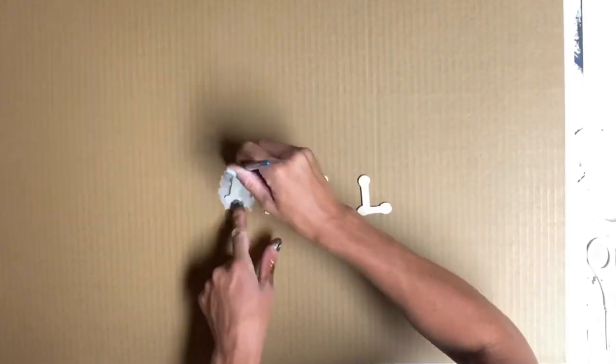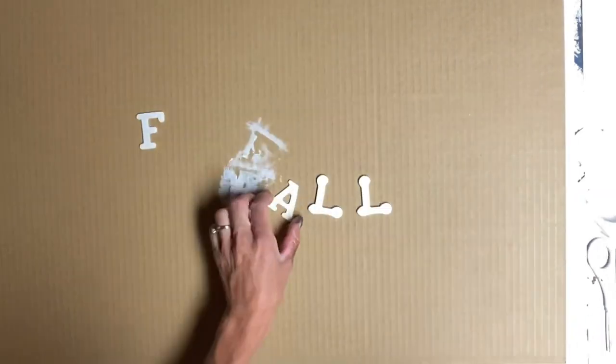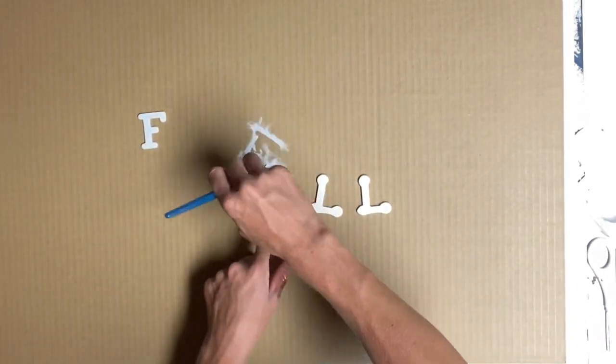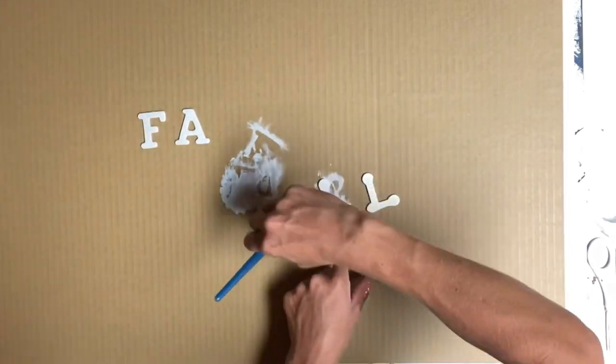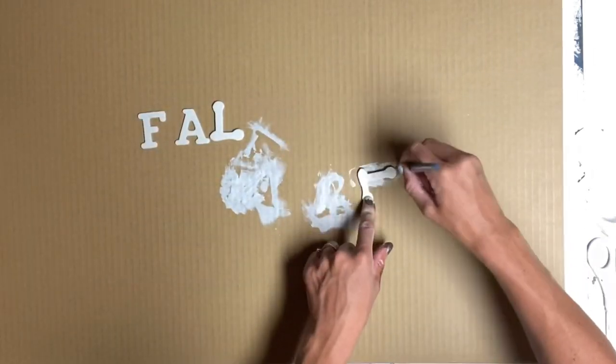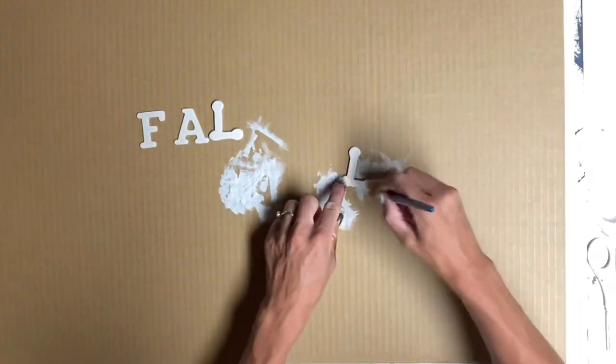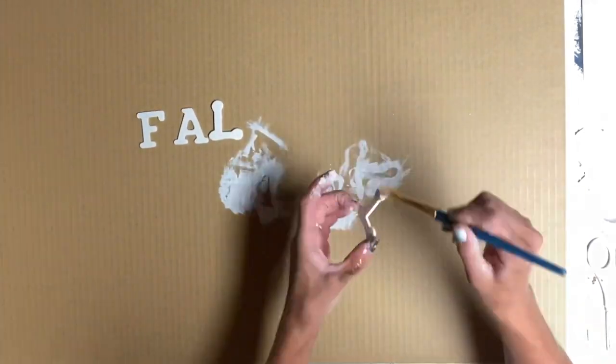I set those aside to dry, and then I took some mini wood letters that I also got from the Dollar Tree. I painted the letters using some Antique Villa from Wise Owl Paint, and my letters here are going to spell the word fall.